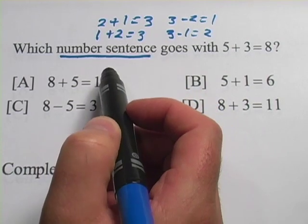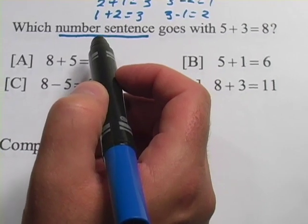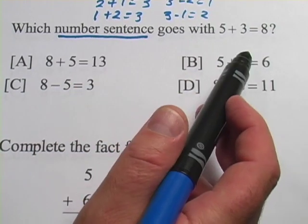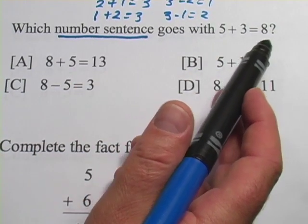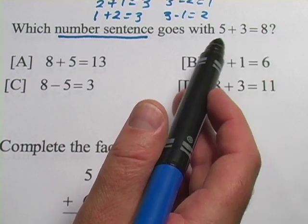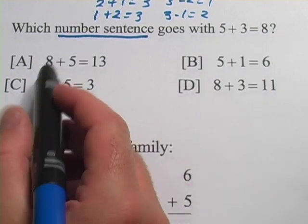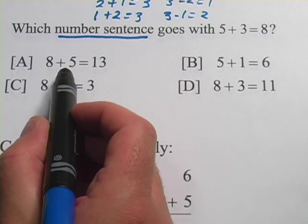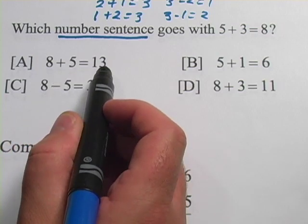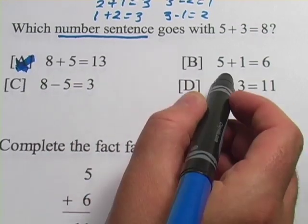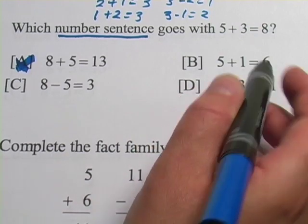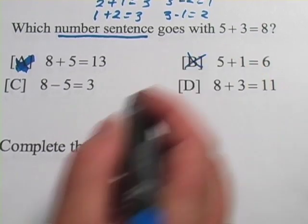So those are the basic ideas. Let's see what the problems are saying. The first one says which number sentence goes with 5 plus 3 equals 8. So we want to look for a number sentence that uses 5, 3, and 8. Well, the first one has an 8, a 5, and a 13. Well, 13 is not in our original, so that's not going to work. Our second one has 5 and a 1 and a 6. Well, 1 and 6 aren't in our original, that's not going to work.